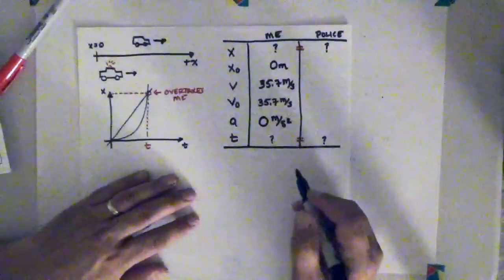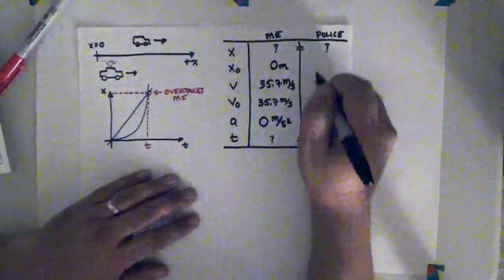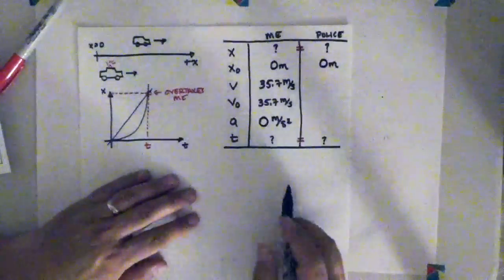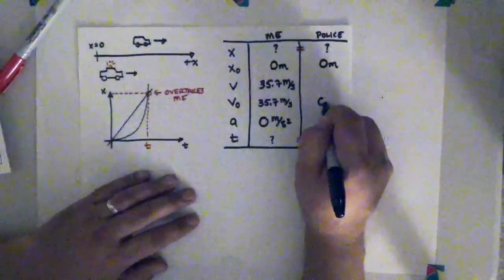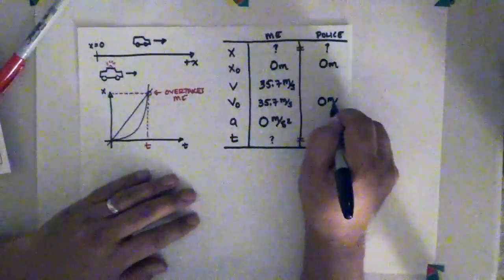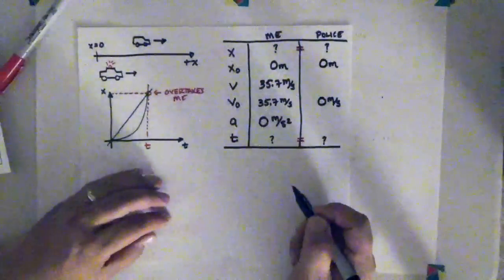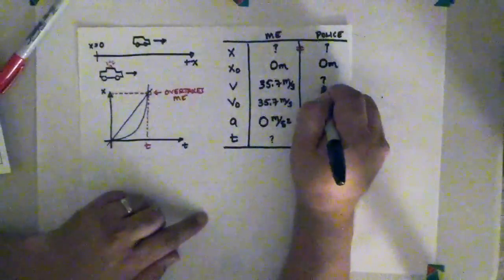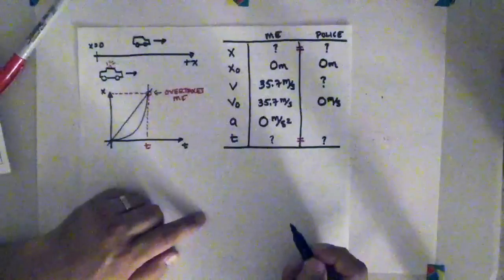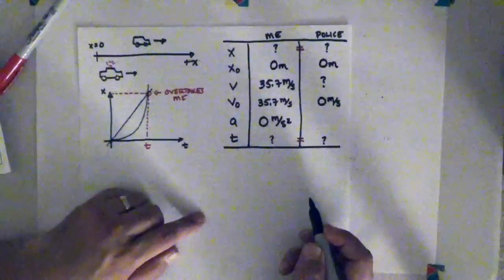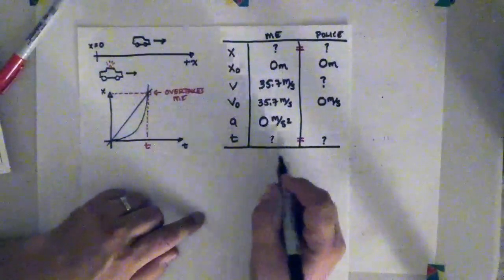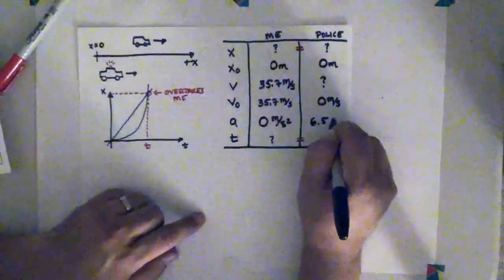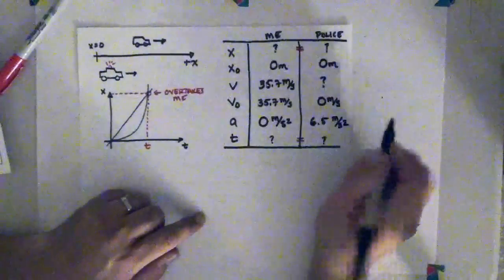She also starts at x equal to 0, so we'll put 0 meters for her. Her initial speed is 0 meters per second. She was sitting still at the moment that I passed her. We don't know what her final speed is. We're not told, although we could figure it out from the kinematic equations. But we are told what her acceleration is, and her acceleration is 6.5 meters per second per second.